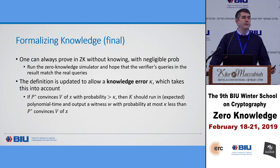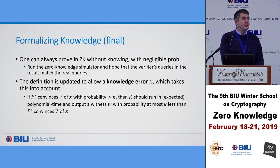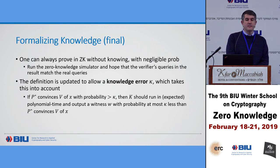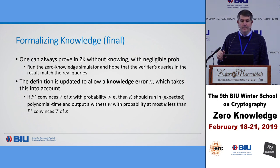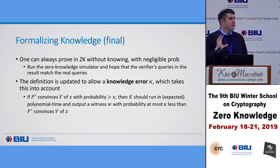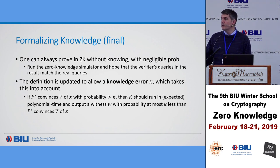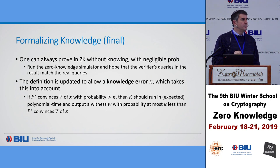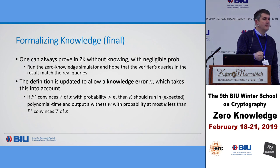We update the definition to allow a knowledge error kappa. If the prover convinces the verifier with probability greater than kappa, then the knowledge extractor should succeed with probability approximately epsilon minus kappa. That's what knowledge essentially means. You can think of it as an oral exam: we have a student, we want to check they know the material, so we take them to a locked room and throw questions at them — rewinding them — and see whether they can answer.